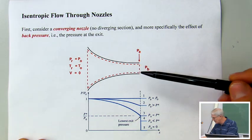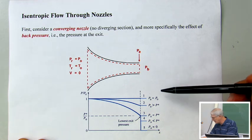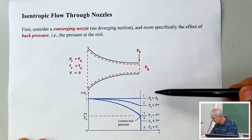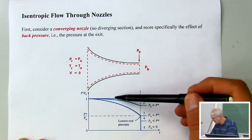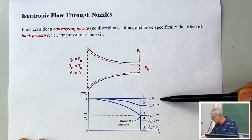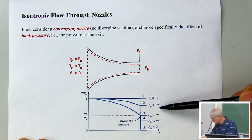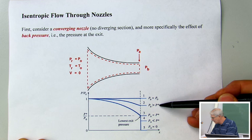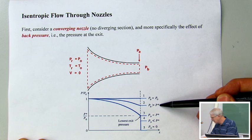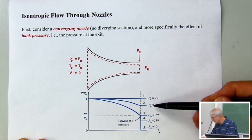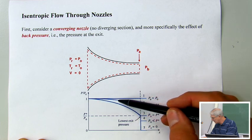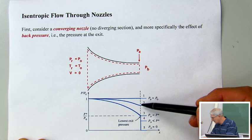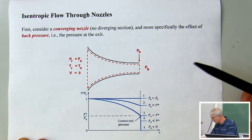If we look at the pressure distribution in the nozzle, we'll look at several different cases. First, when the back pressure equals the stagnation pressure, we have a horizontal line — there's no change in the pressure distribution because there's no flow. If we reduce the back pressure to below stagnation pressure but above P star — P star being the pressure when the Mach number is 1 — we'll have a pressure distribution that decreases in the nozzle, comes out isentropically, and matches the back pressure.